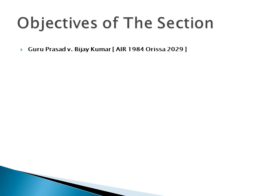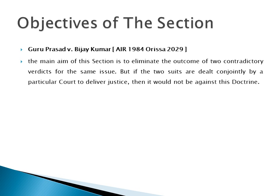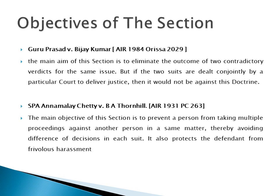In the case of Guru Prasad versus Busy Kumar, it was held that the main aim of this section is to eliminate the outcome of two contradictory verdicts for the same issue, but if two suits are dealt with conjointly by a particular court to deliver justice, then it would not be against this doctrine. In SBA Anomaly Chetty versus BA Thornhill, it was observed that the main objective is to prevent a person from taking multiple proceedings against another person in the same matter, thereby avoiding differences of decisions in each suit, and to protect the defendant from frivolous harassment.